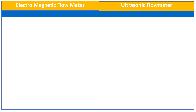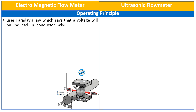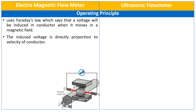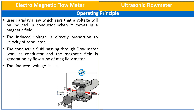First of all, we will talk about the operating principle of both the flow meters. In electromagnetic flow meters, it uses Faraday's law, which says that a voltage will be induced in a conductor when it moves in a magnetic field. The induced voltage is directly proportional to the velocity of the conductor. The conductive fluid passing through the flow meter works as a conductor, and the magnetic field is generated by the flow tube of the flow meter. The induced voltage is sensed by the sensing electrodes fitted inside the flow tube.